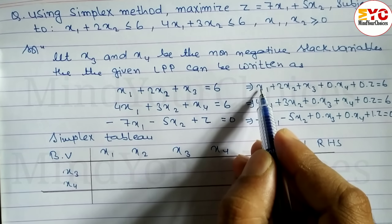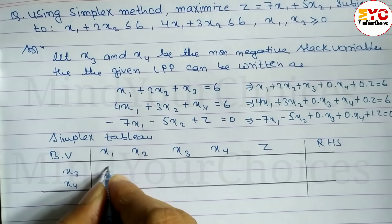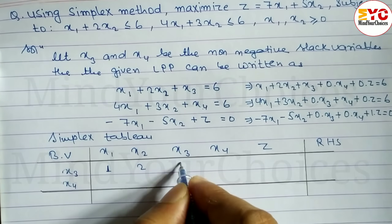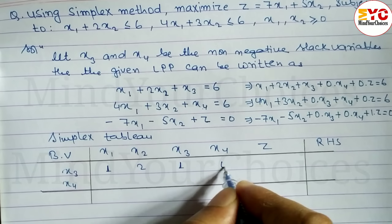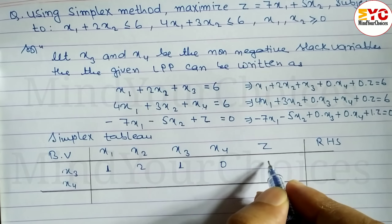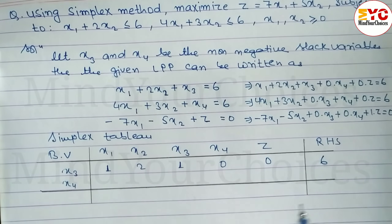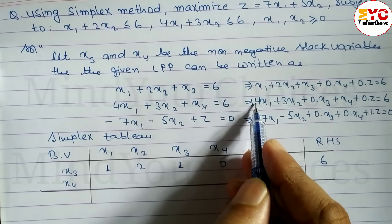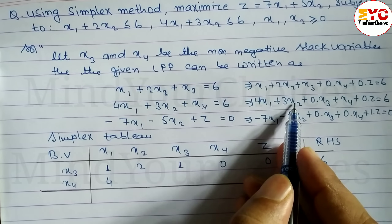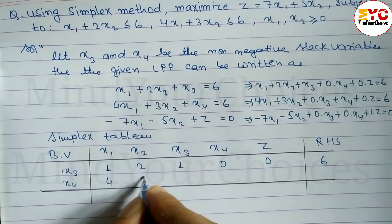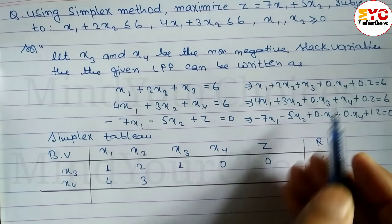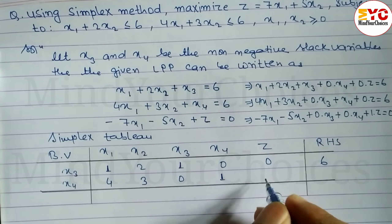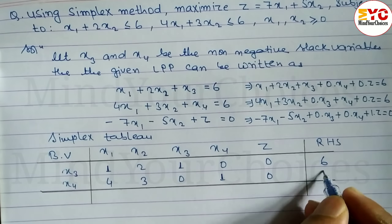Filling in the tableau: first equation — coefficient of x1 is 1, x2 is 2, x3 is 1, x4 is 0, z is 0, RHS is 6. Second equation — coefficient of x1 is 4, x2 is 3, x3 is 0, x4 is 1, z is 0, RHS is 6. This forms an identity matrix in the x3, x4, z columns.